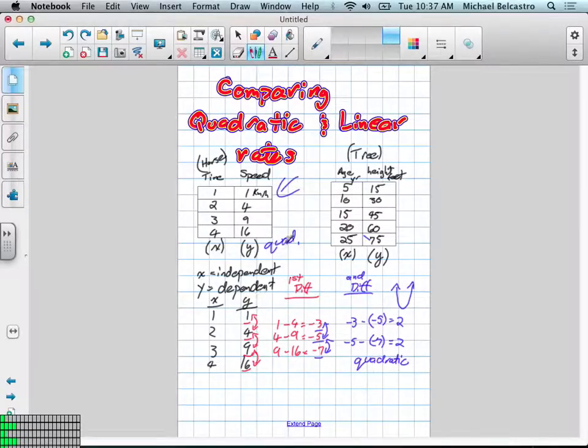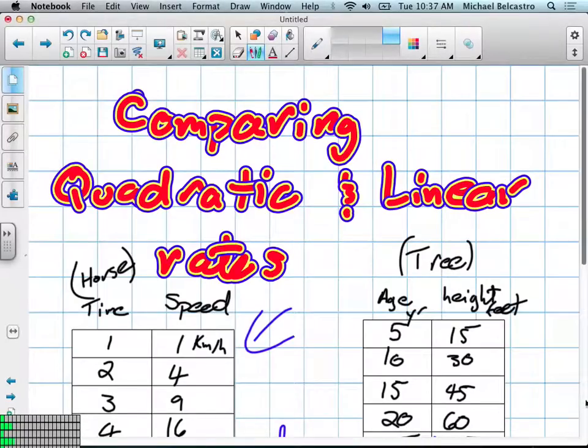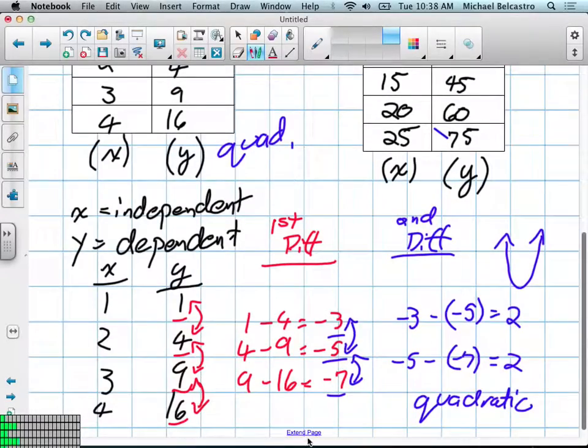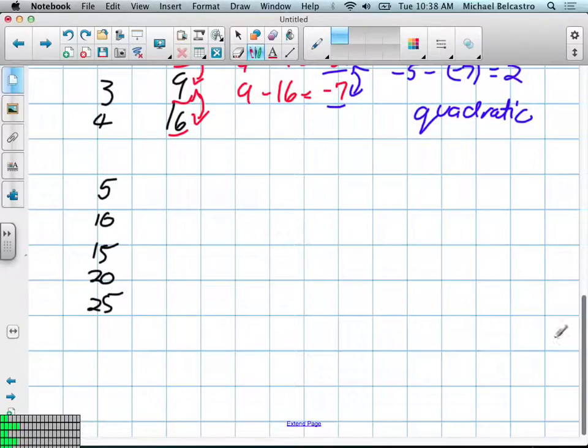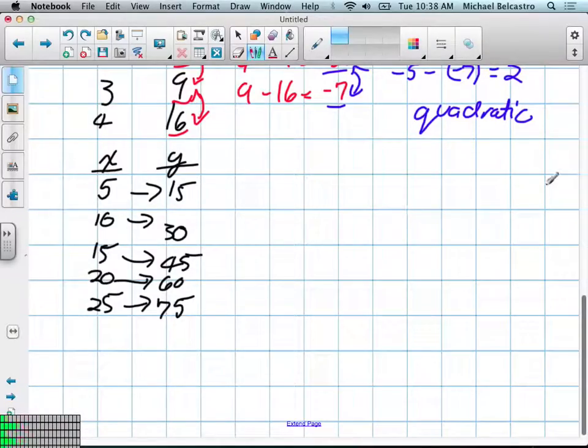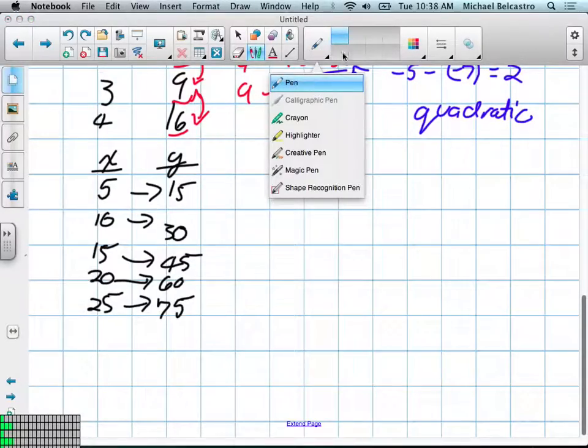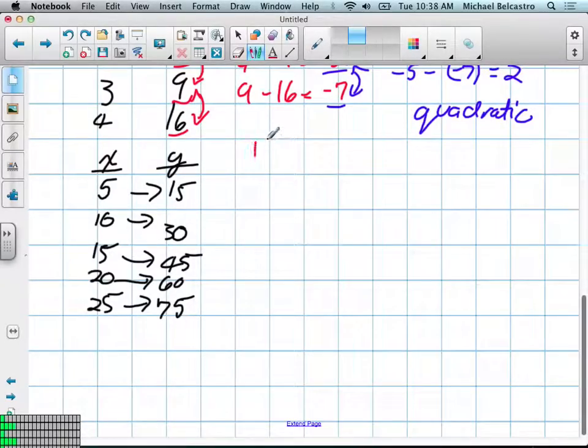We're going to do the same idea with the other information we have. I'll quickly put the information up. Age of the tree was 5, 10, 15, 20, and 25 years. And its height was 15, 30, 45, 60, and 75. I know those aren't in line, let's just put arrows between them. That's how they corresponded to each other. So there's our x and our y. Now remember, I should have brought this up earlier, these two x and y values, the independent and dependent, those are points on a graph. So we can plot this and essentially get an idea of what we have. So what's the first thing we're going to try? First differences.